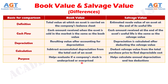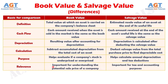Number five: the book value helps to evaluate whether a company's stock is underpriced or overpriced, whereas the salvage value helps in calculating the annual depreciation and tax deductions. Number six: book value is important for understanding the potential sale price of a company, whereas salvage value is important for tax and accounting purposes.